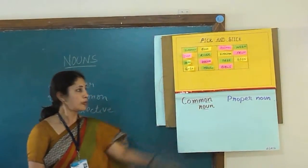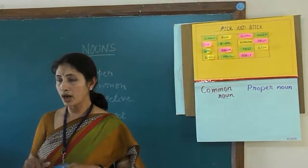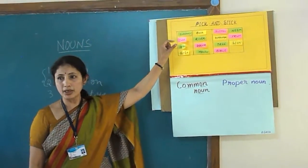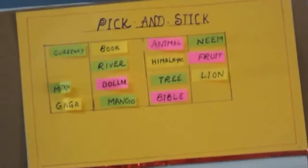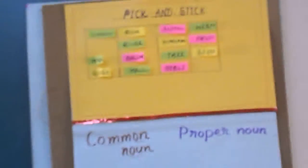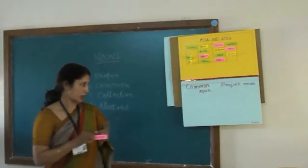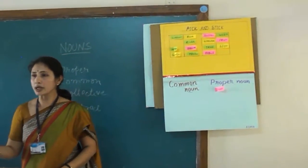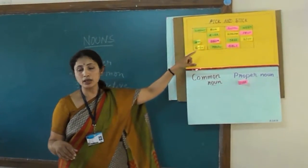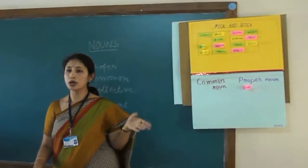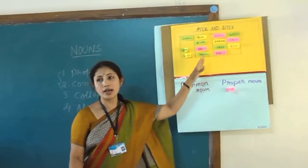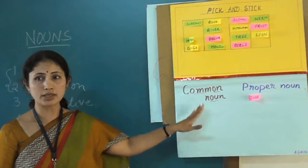I have made two columns — one for common noun and one for proper noun. I divided the class into four groups. One child from each group has to come and pick a strip of their own choice. For example, if they pick 'India,' which is the name of a country — is it common or proper? Proper. So the child has to come and paste 'India' in the proper noun column. Each group takes turns picking a strip, identifies whether it is a proper noun or a common noun, and pastes it in the correct category. This continues until all the names have been placed in the given columns.